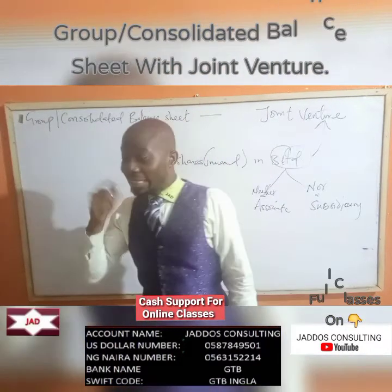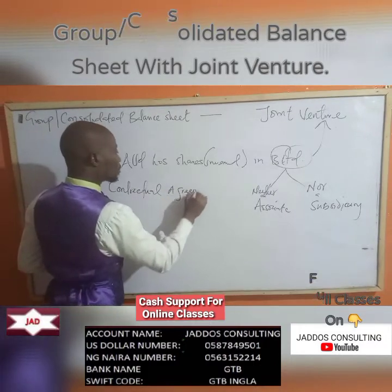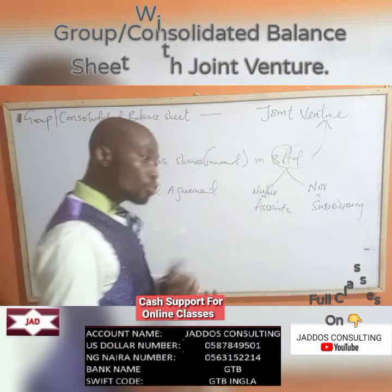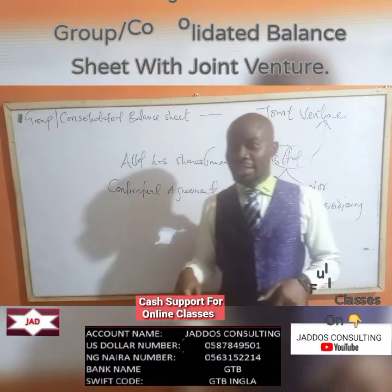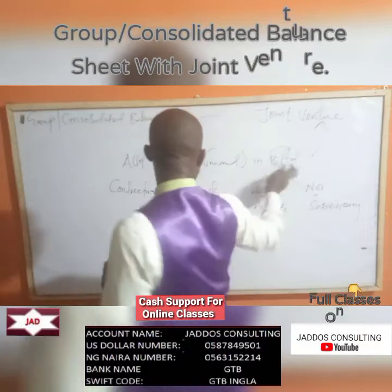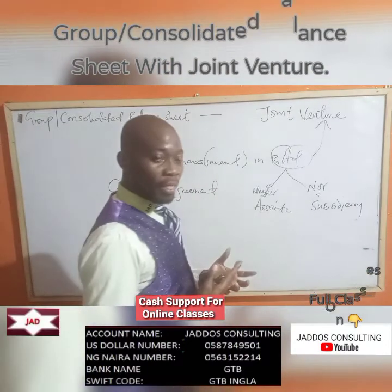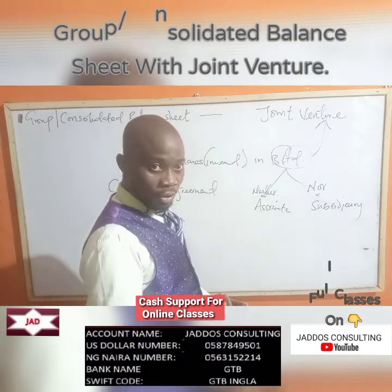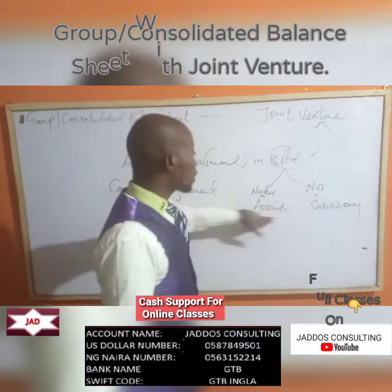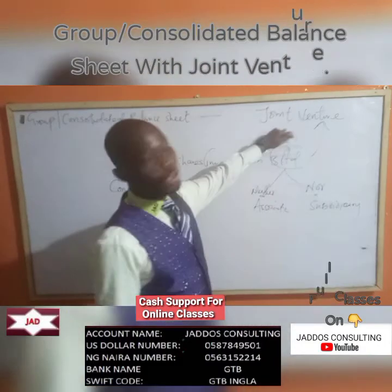The key element here is that there must be a contractual agreement. The contractual agreement will enable us to establish the exact relationship between the companies. Where there is no contractual agreement, then the relationship likely does not make B Limited a joint venture. For joint venture to actually exist or be established, there is a need for a contractual document or contractual agreement. The contractual agreement must help us establish there is no associate relationship and no subsidiary relationship. Once you don't have an associate or subsidiary relationship, then you have the joint venture relationship.